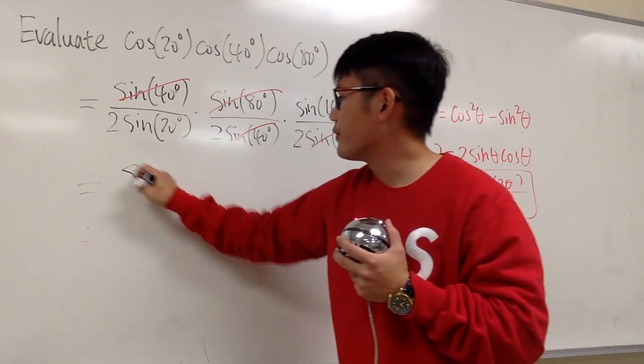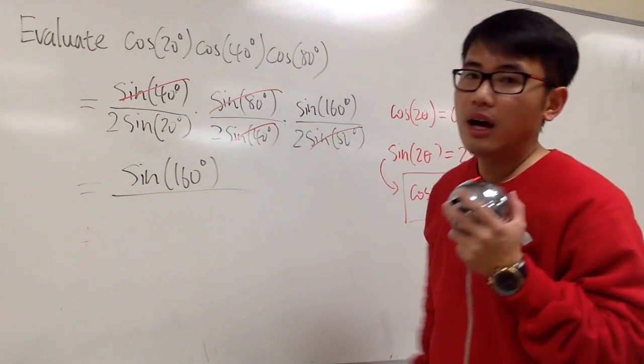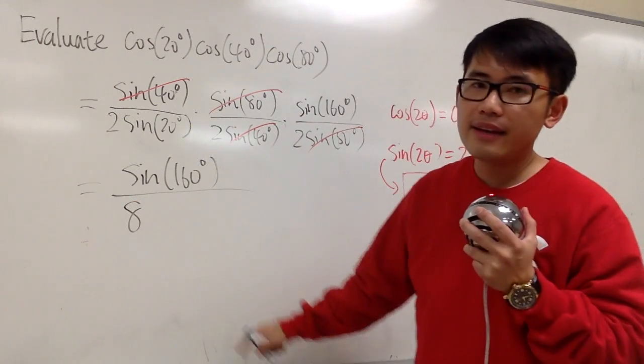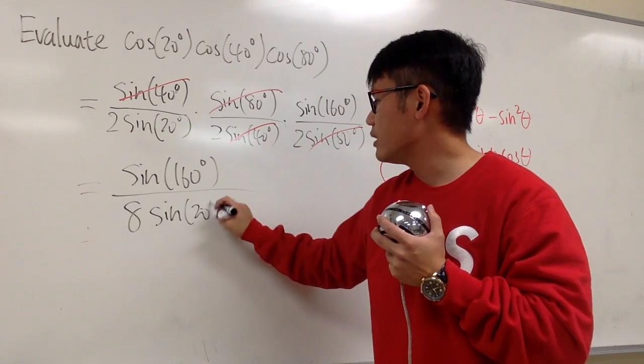On the top, we have sine of 160 degrees, over, on the bottom, we have 2 times 2 times 2, which is going to be an 8. And then, this right here still survives. Oh my God, sine of 20 degrees.